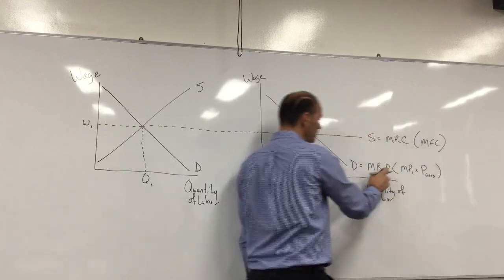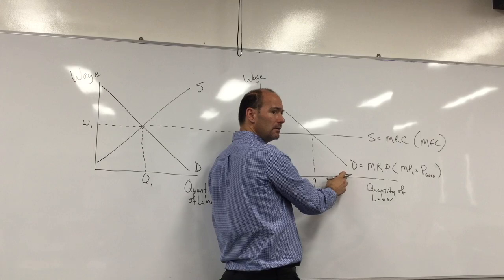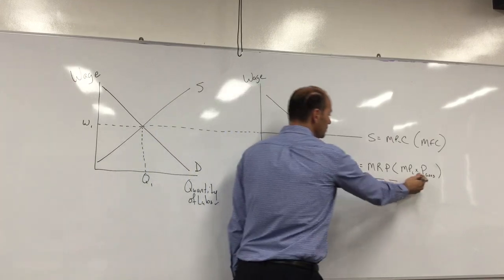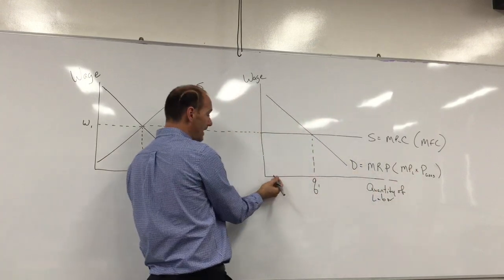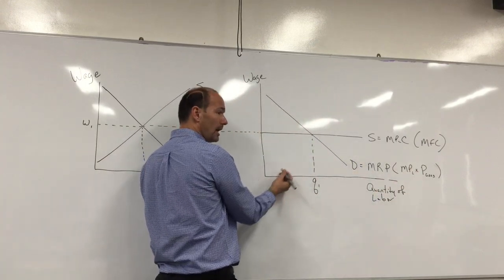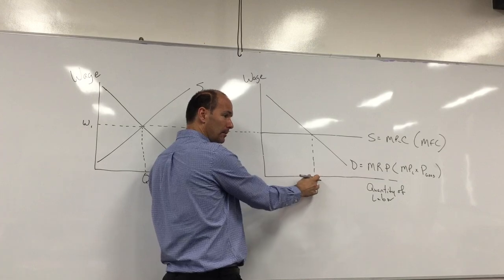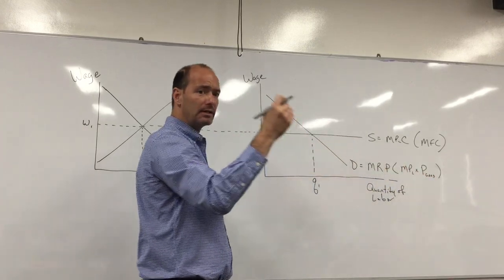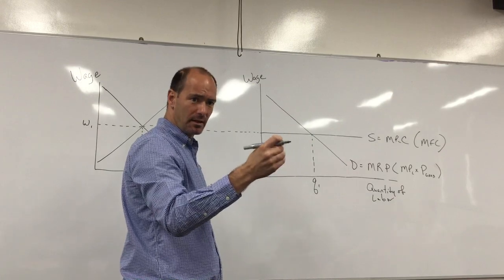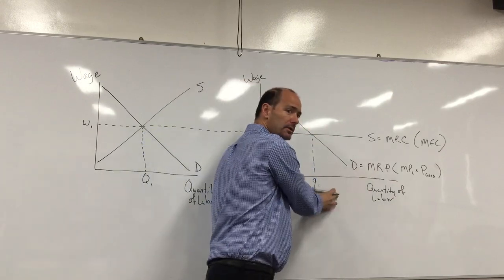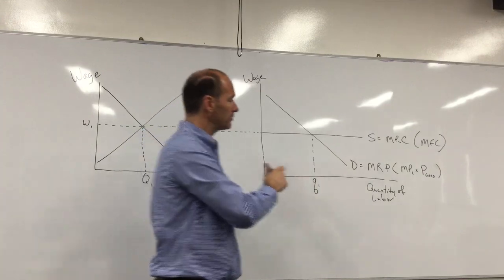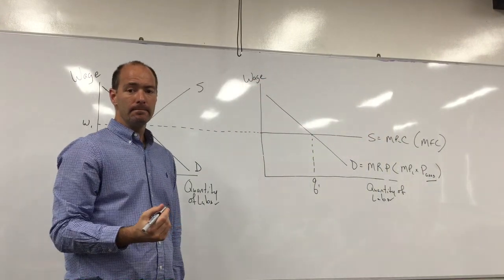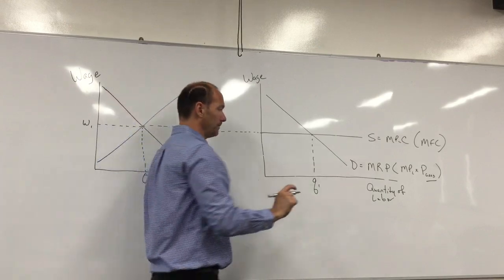Marginal revenue product at any given quantity of labor equals the marginal product of labor at that quantity times the price of the good. Remember, in a perfectly competitive market, the price of the good is going to be constant no matter how much output this business makes.